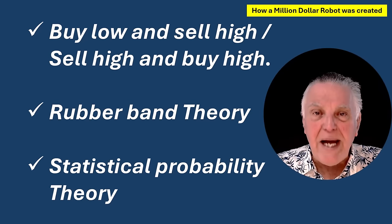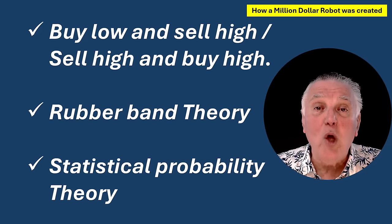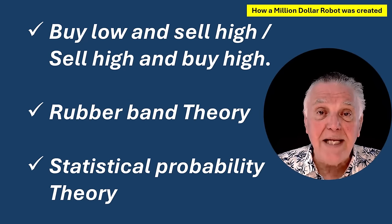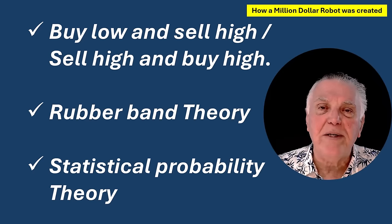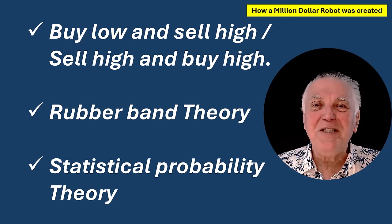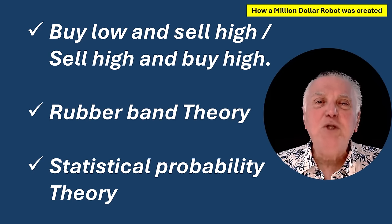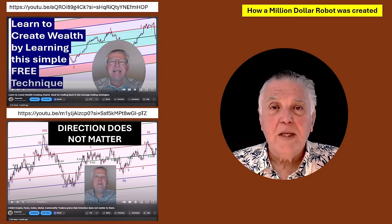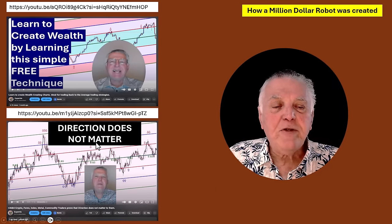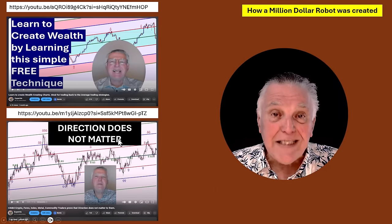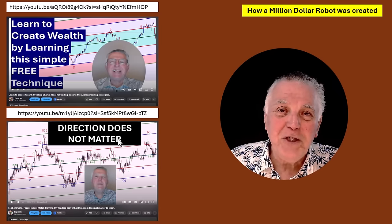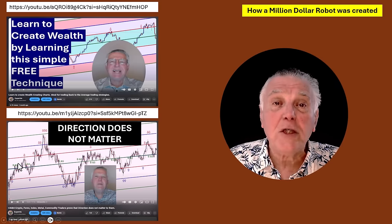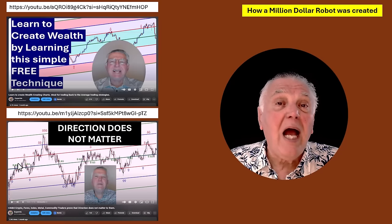We're going to look at the rubber band theory, and most importantly what this whole robot is based on: the statistical probability theory using standard deviations. It sounds like a mouthful — you don't have to worry about it as long as the robot's making money. But I'm sure there are some enthusiasts who would love to get their minds around this trading technique. It all started about a month ago when I introduced the concept where direction does not matter to succeed in the forex market, and I used the standard deviation tool to show you how to make money trading without worrying about direction.